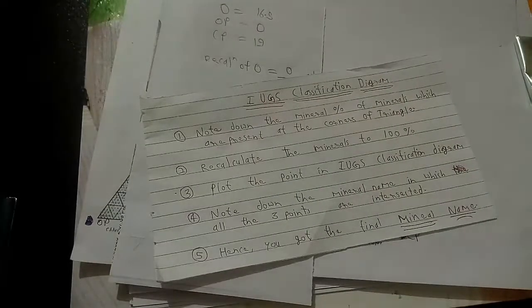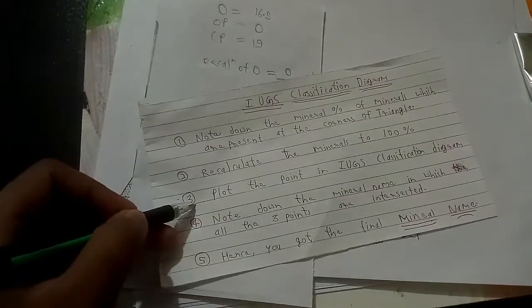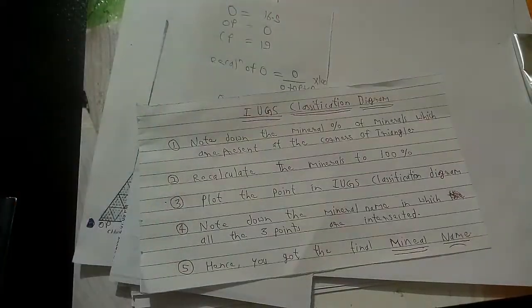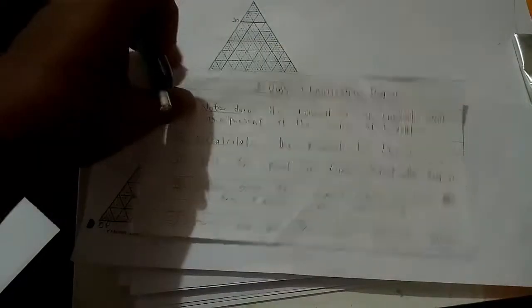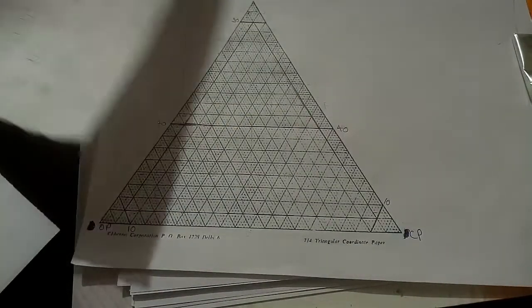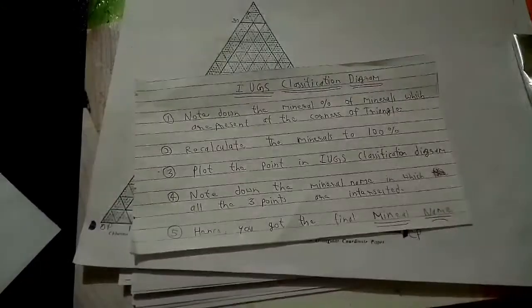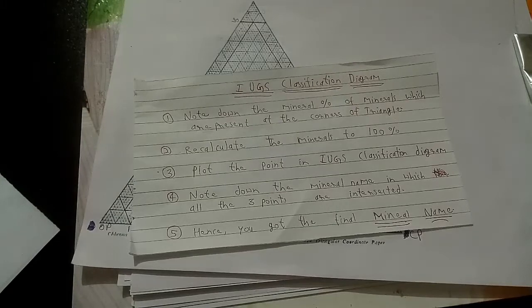Now next step is, we have done the recalculation, now third step is plot the points in IUGS classification diagram. This is our diagram. We will plot here the points. Let's plot it.